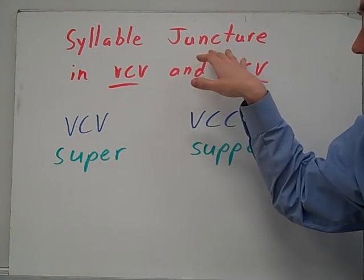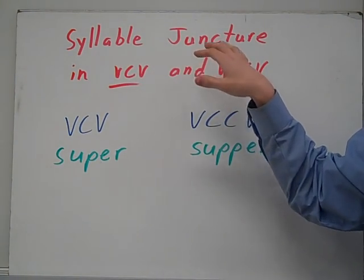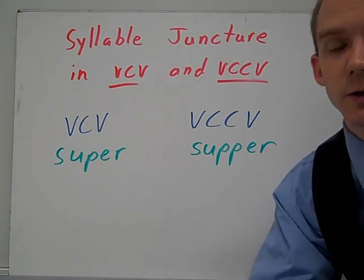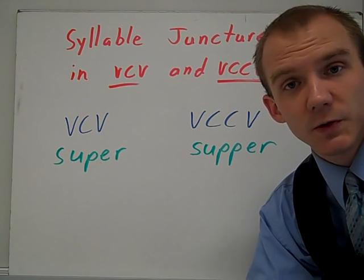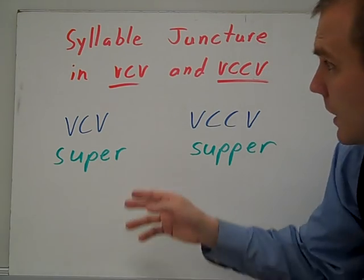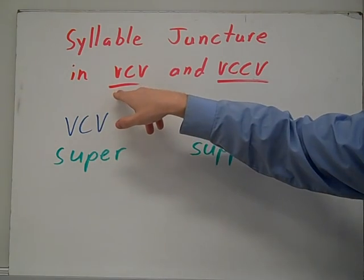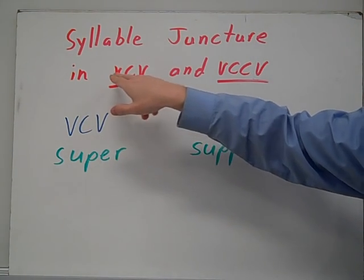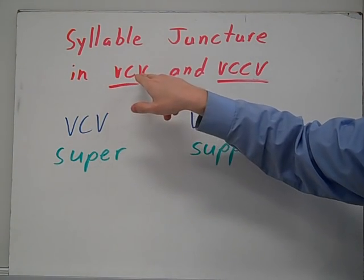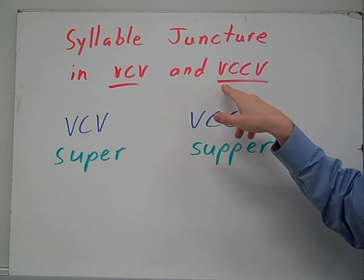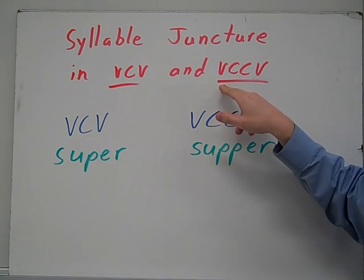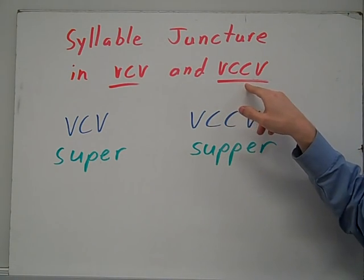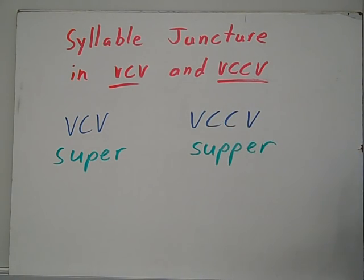Let's look at syllable juncture. What that means is when you have a two-syllable word, it's where the syllable splits. We're going to look at VCV, or vowel-consonant-vowel words, and VCCV, or vowel-consonant-consonant-vowel words.